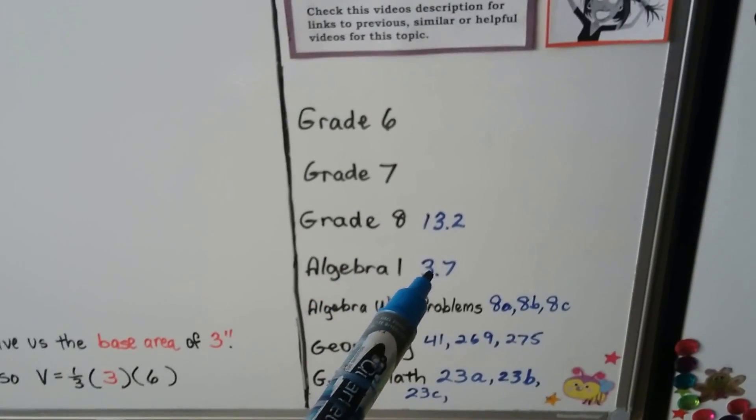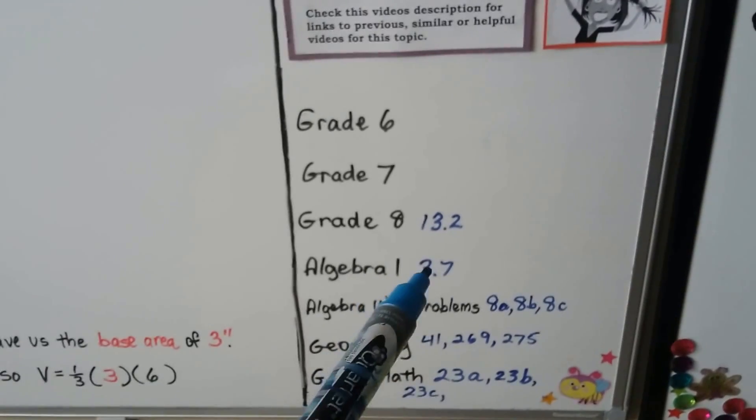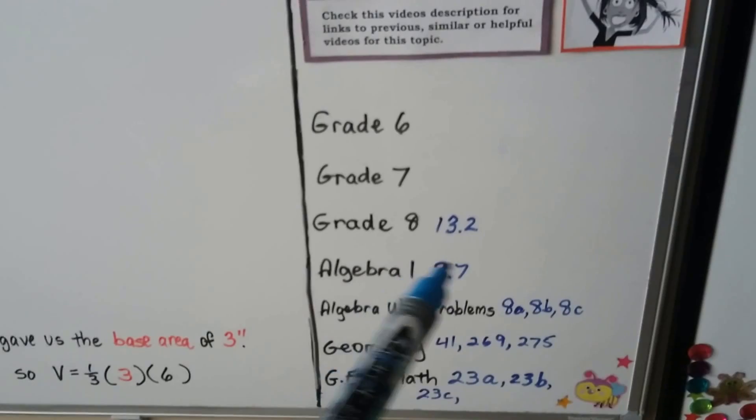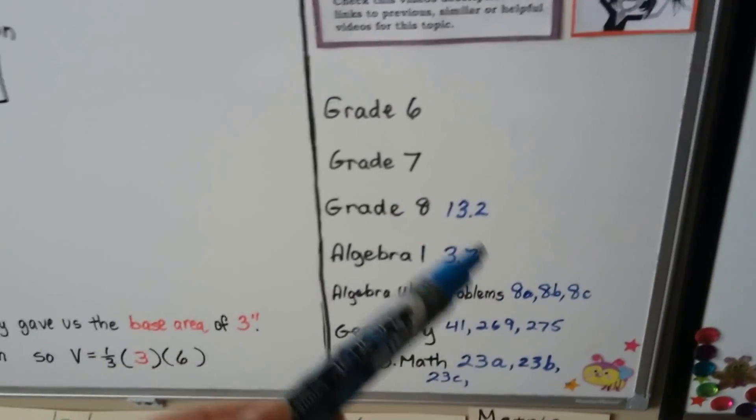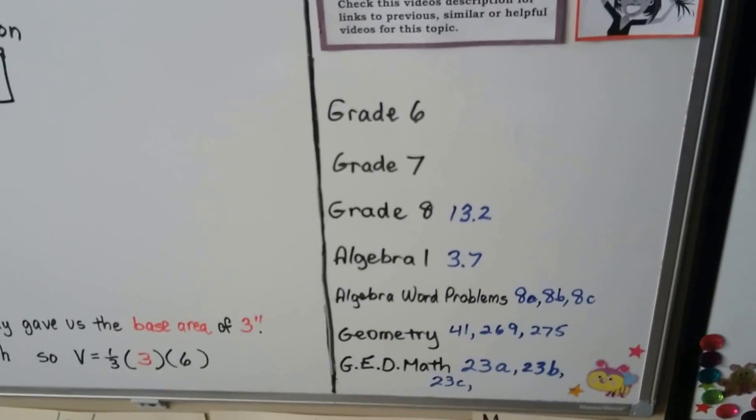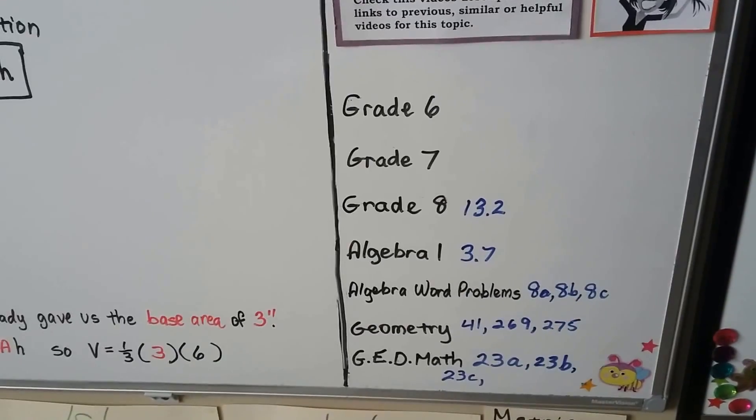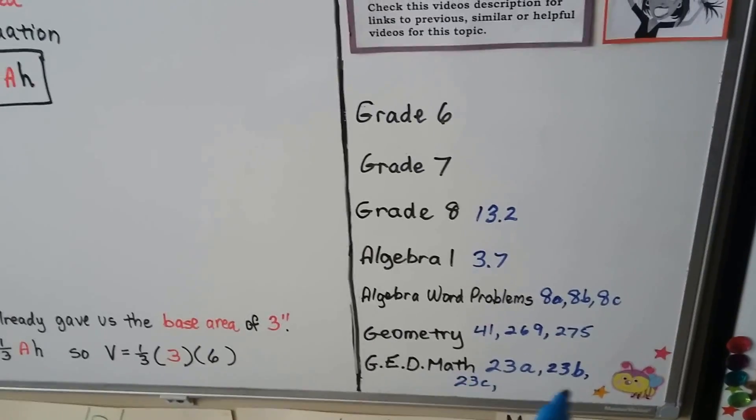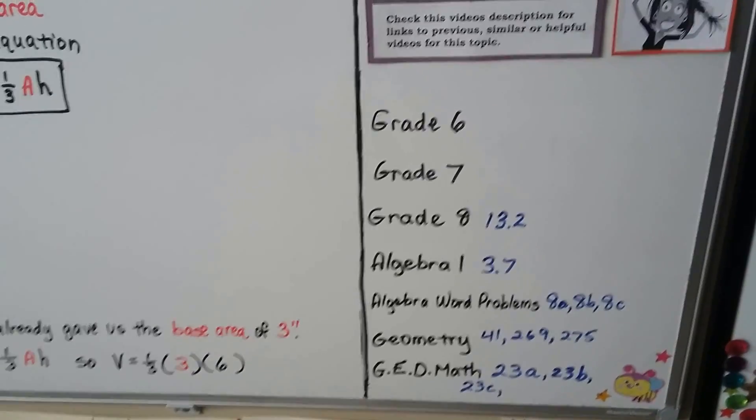This Algebra 1, 3.7, I put that into the GED playlist. If you haven't seen it, there's going to be a link in this description. It talked about how to rearrange a formula to solve for one of the different letters. And then I've got all these different volume videos that you can watch, even some from geometry, and some from my Algebra Word Problem playlist. And of course, I'm going to have links to the previous videos for this Applying Formulas Lesson 23 that we've done.